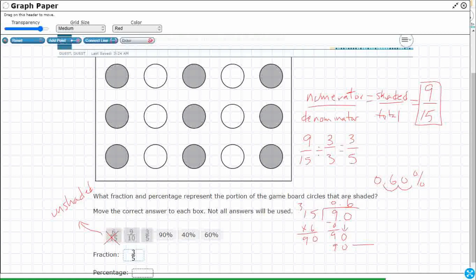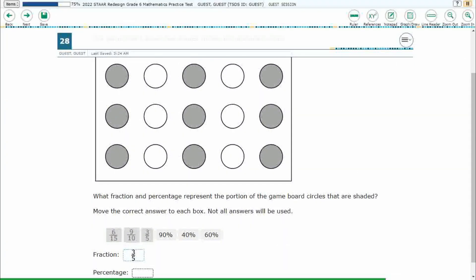Another way to do it is we've already got the three fifths. If I can make an equivalent fraction by changing this into tenths, you might think, why would I want to do that? Well, look at that. Six tenths equals six tenths. Boom. 60%. Either way, the fraction is three fifths and the percentage is 60%.